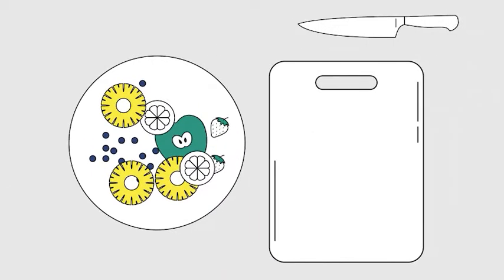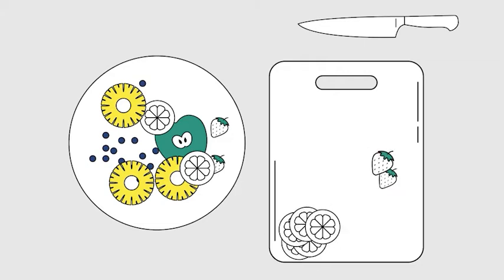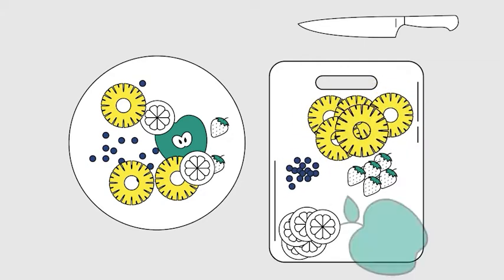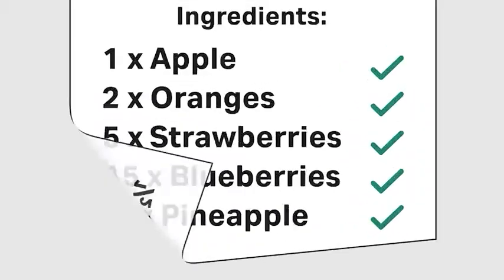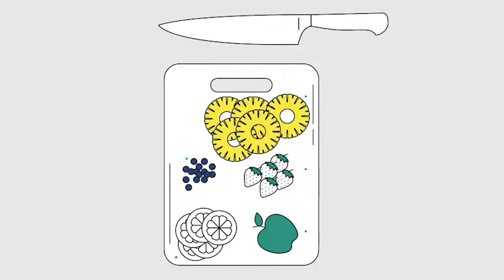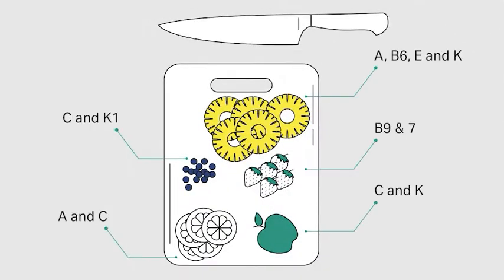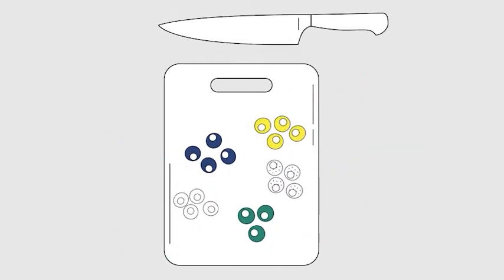If you get the same task, but instead of a smoothie you're given a fruit salad, now you can easily identify each fruit type. You can see the amount, the ratio of each fruit type, and identify which vitamins come from which fruit, and so on. And that's what single cell analysis does for you.